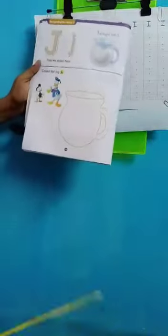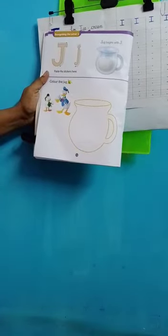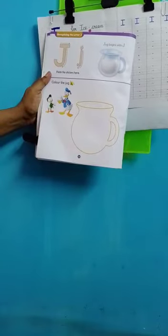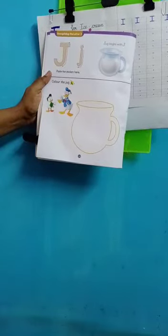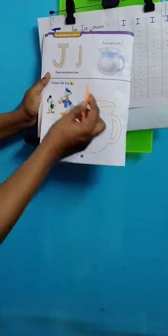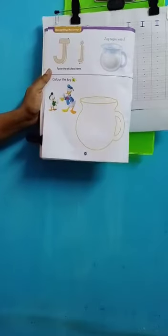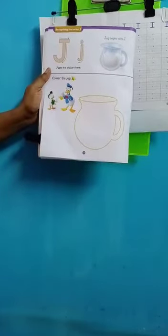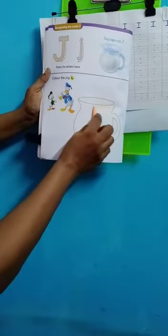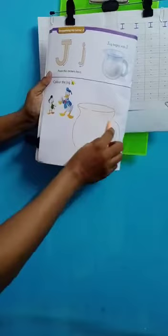Everyone turn to the next page of J. We have J for jug. Now everyone take your colors and one color and you will color the jug. So they are giving you orange or yellow, one color you can use, you can use any color you want. So you color your jug nicely inside the jug you will color, not outside, do not come out of the jug.